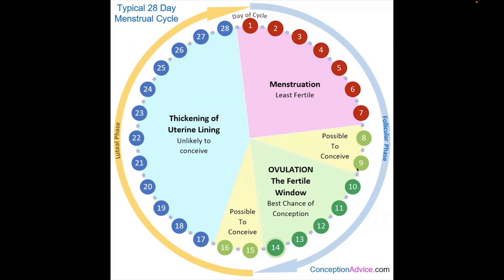Between day eight and day nine, that's your possible time to conceive, but there's a lower chance since you've only just finished your period — though there is still a possibility. Between day 10 and day 14 is your ovulation fertile window. Every woman has a fertile window of about five to six days. So from day 10 to day 14, you're likely to get pregnant. Some people have four days, some five, some six — everybody's different depending on their circle.